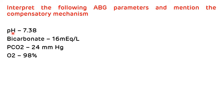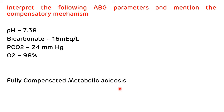Case study 3a: Interpret the following ABG and identify the compensatory mechanism. pH is 7.38 — normal (7.35–7.45). Bicarbonate is 16 mEq/L — low (normal 22–26). PCO2 is 24 mmHg — also reduced. O2 saturation is 98%. Although pH is normal, it trends toward the acidic side, and bicarbonate and pH move in the same direction. This is a fully compensated metabolic acidosis, compensated by hyperventilation causing a reduction in PCO2. Because pH is normal, it is fully compensated.